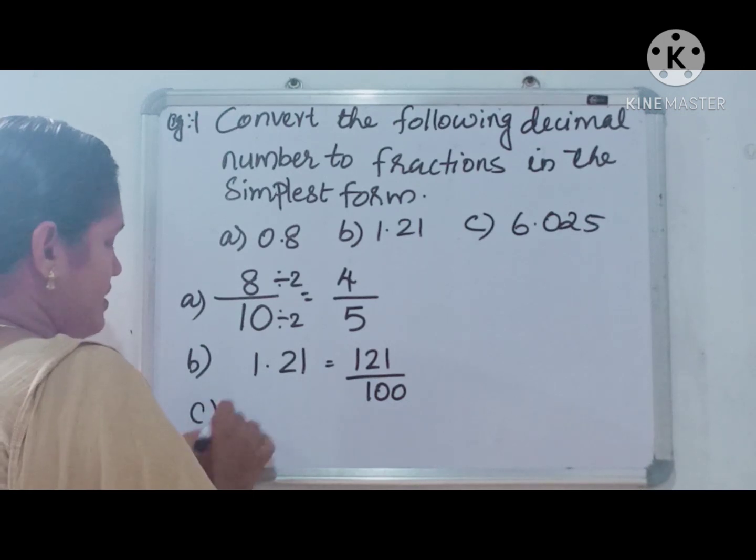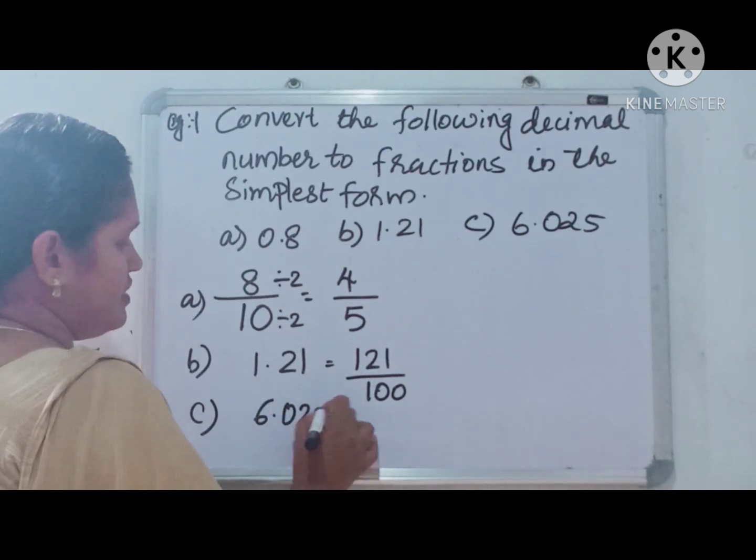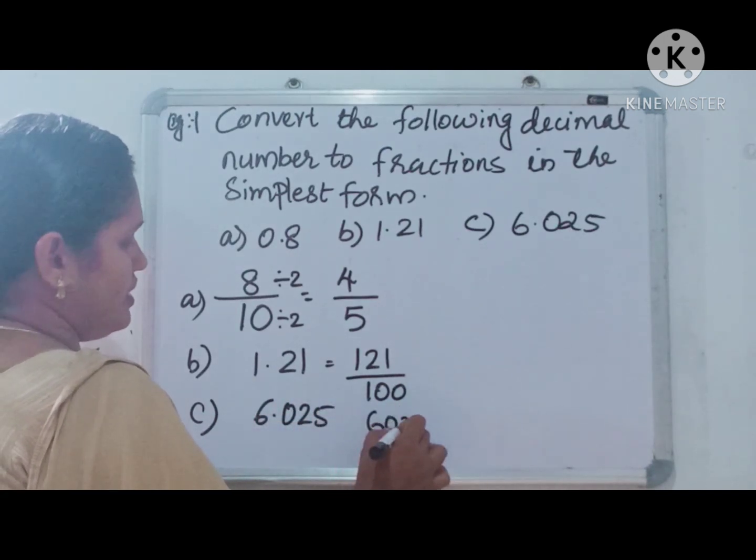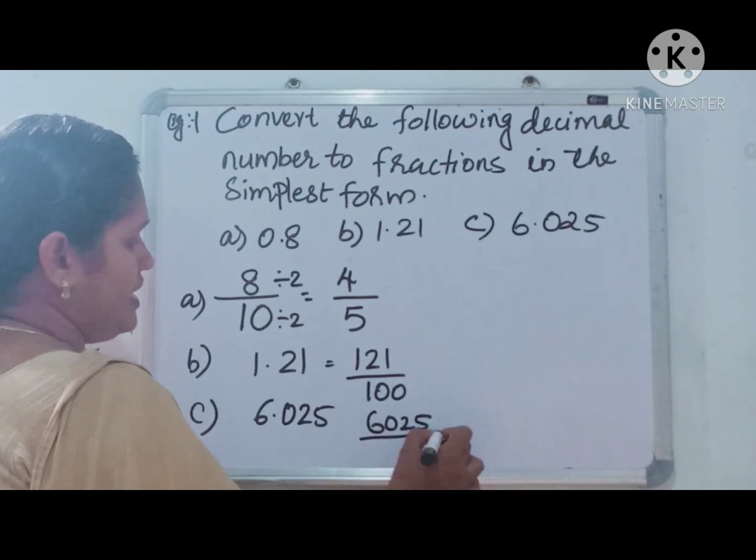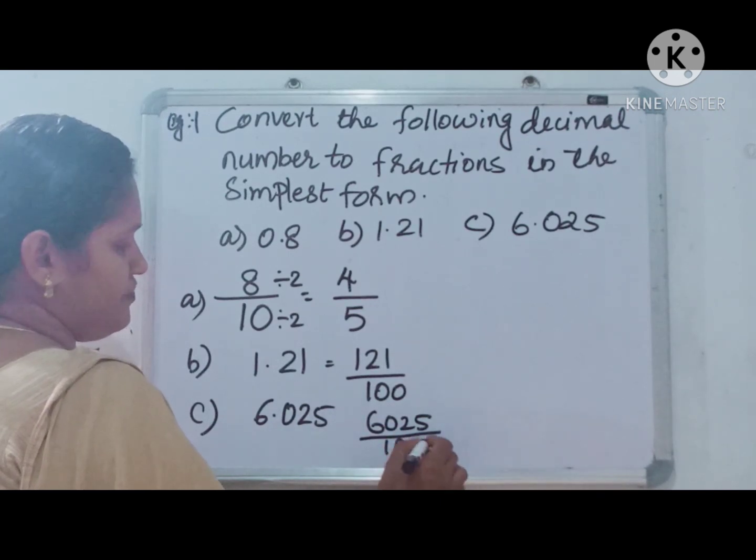See, 6.025. 6025 by how many places here? 1, 2, 3. So 3 zeros: 1000.